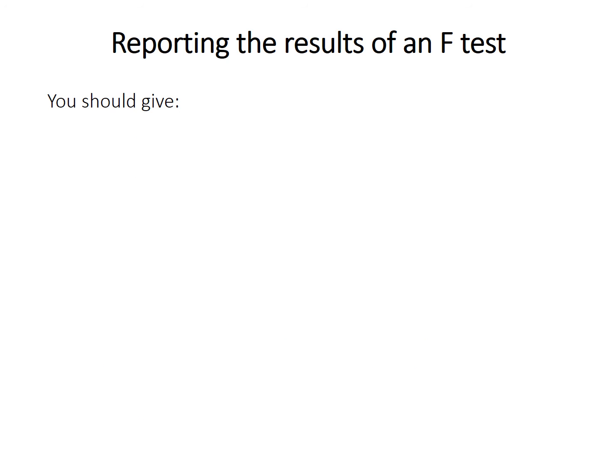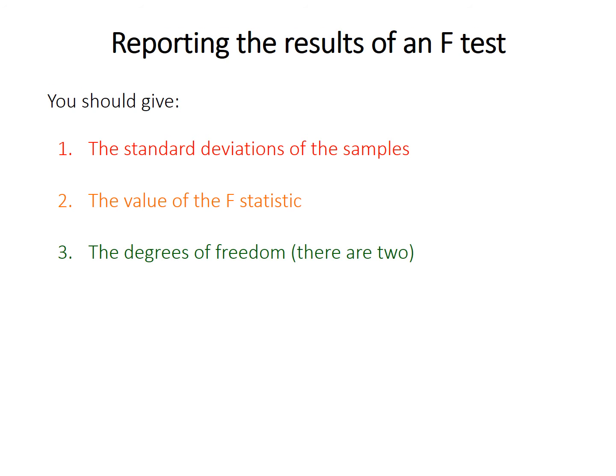Here's how you should report the results of an F-test if you're writing them in a paper or for your problem sets. You should give the standard deviations of both samples. Even though the F-test tests for differences in variance, variances are measured in units squared and it's kind of awkward. The standard deviation has much more intuitive units. You should also give the value of the F-statistic, both of the degrees of freedom, and the p-value.